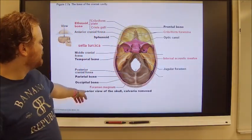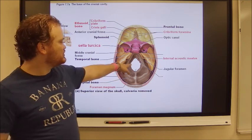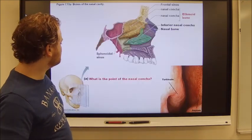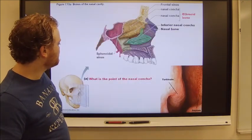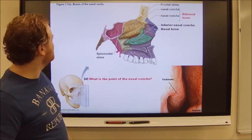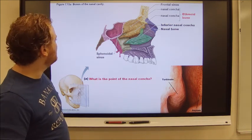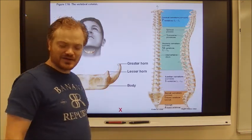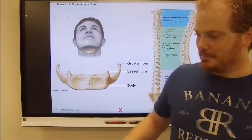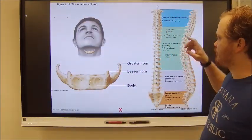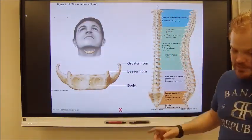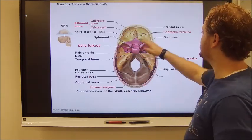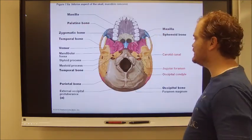The foramen magnum — we've already talked about this — is where your spinal cord connects. That covers the skull. All these parts and pieces are fair game.